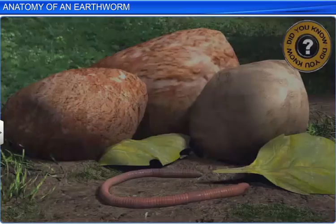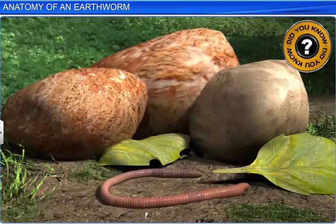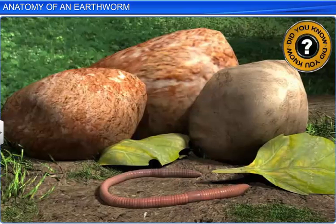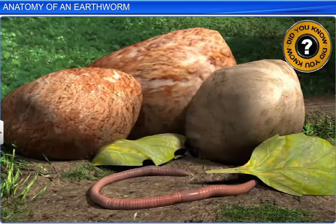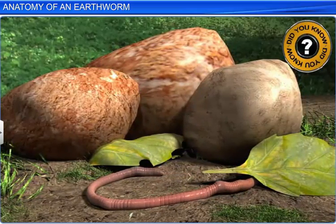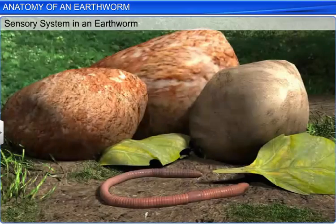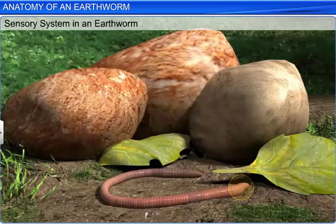Did you know that earthworms don't possess eyes? However, they have light and touch sensitive receptors to help them recognize light intensities and ground vibrations. They also have specialized chemoreceptors or taste receptors which help them respond to chemical stimuli, and these are situated at the anterior end.